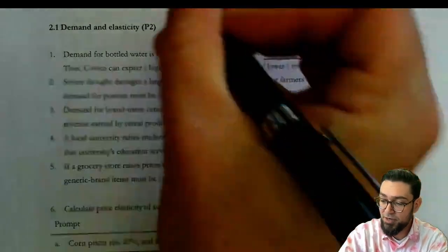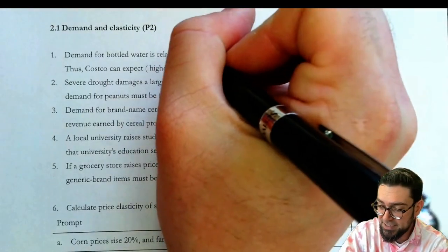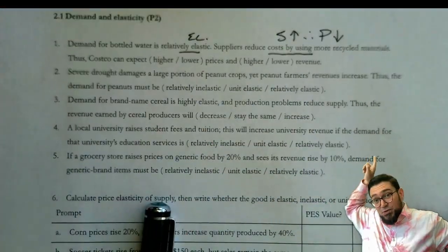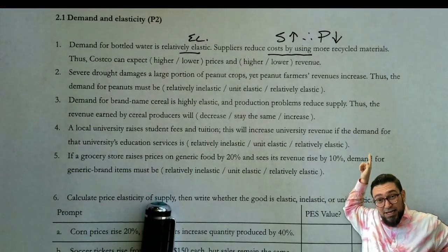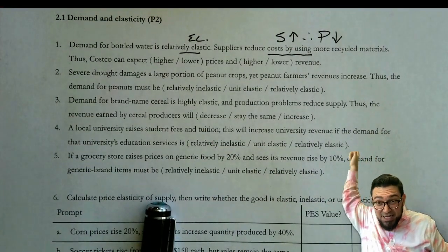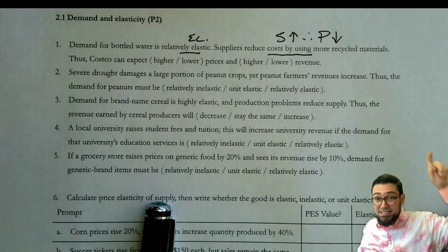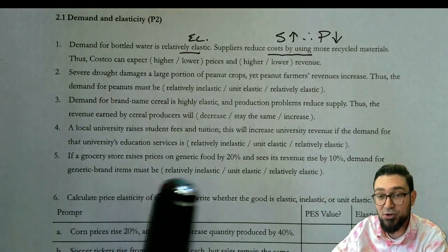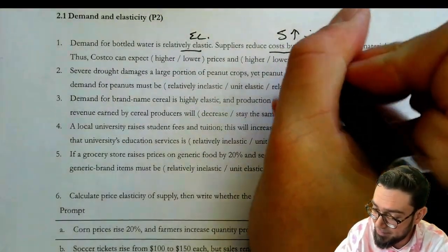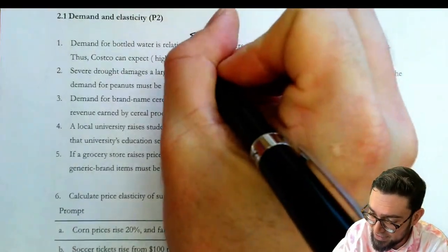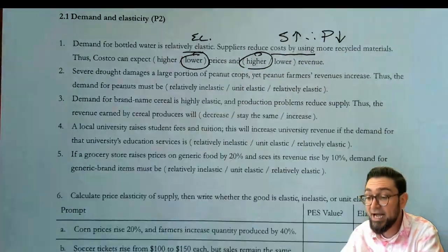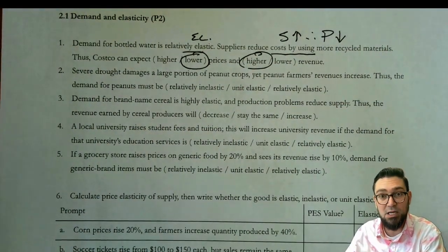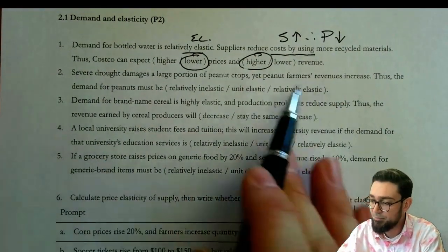Now, if I know that price is falling, and that I am relatively elastic, the price is going down — so that makes total revenue go up. So we would say that we would expect lower prices and higher revenue as a consequence of that change.